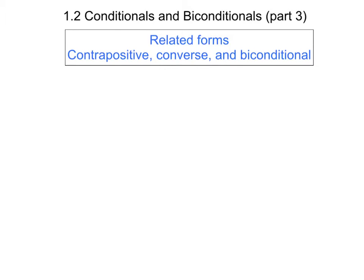This is part 3 in our series of videos on section 1.2 concerning conditionals and biconditionals. In this video, we consider for a given conditional statement the related statements of its contrapositive, converse, and biconditional.